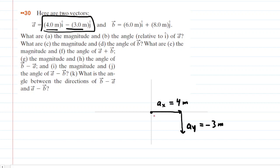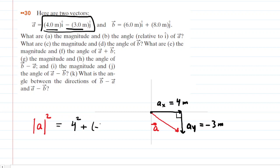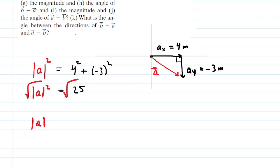The resultant vector is simply the hypotenuse of this right triangle — we call that vector A. Our job in part A is to find its magnitude. Since we formed a right triangle, we use the Pythagorean theorem: the magnitude of A squared equals A sub X squared plus A sub Y squared, so 4 squared plus negative 3 squared, which gives 16 plus 9, equaling 25. Taking the square root of both sides, the magnitude of vector A is equal to 5 meters.